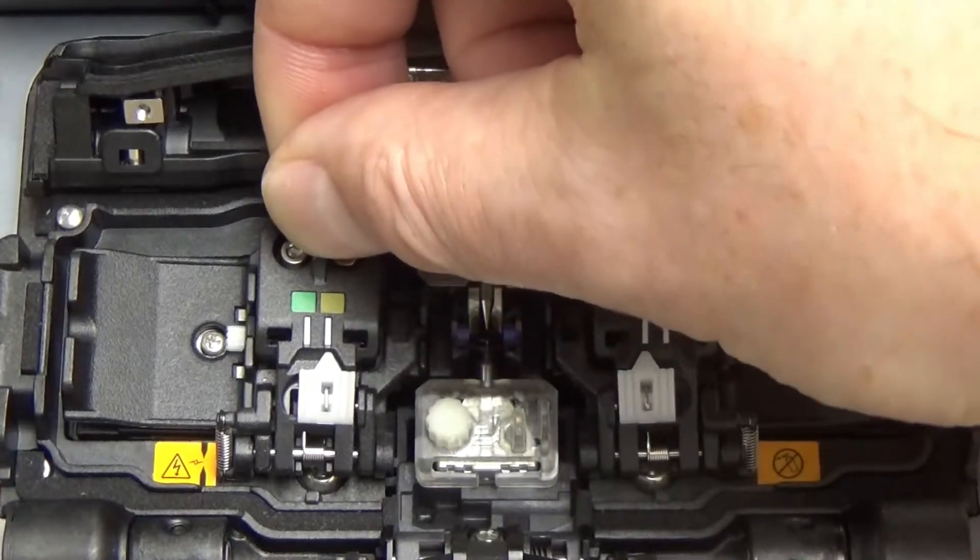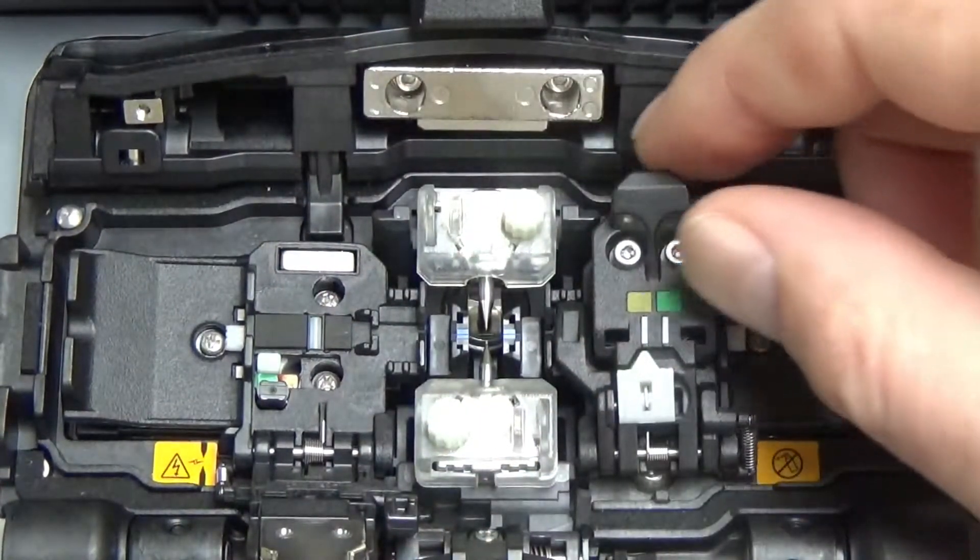With older Fujikura Splicers, you would need a pair of special fiber holders to deal with this kind of fiber.